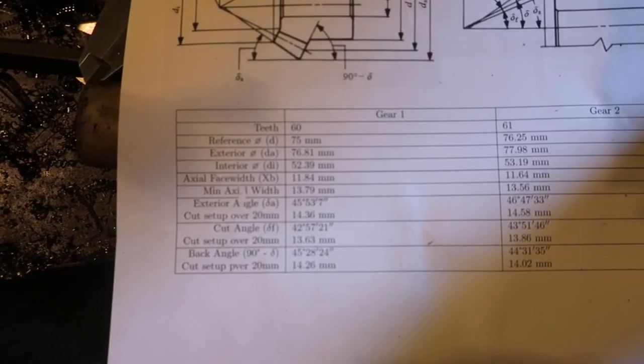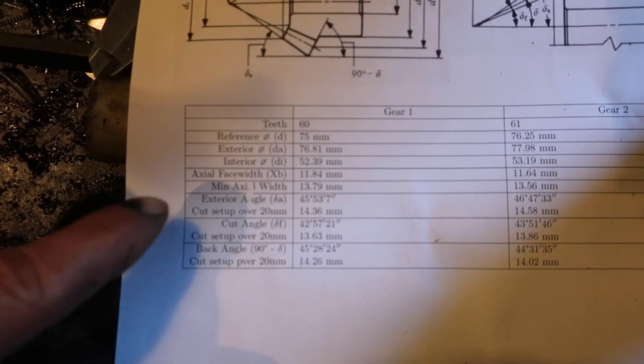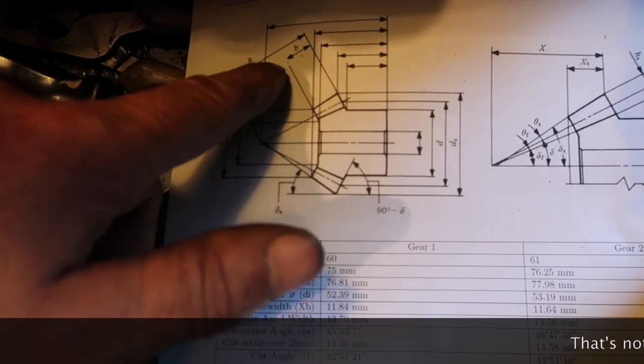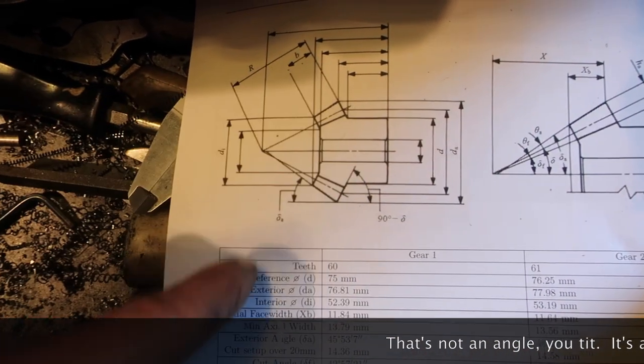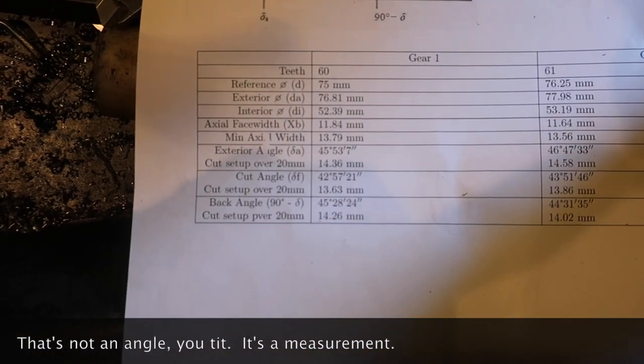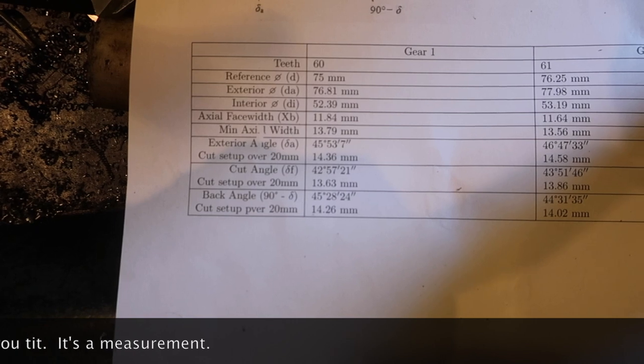And there we go. For the 60 tooth gear, which is the one we're about to look at, we need to set the exterior angle to 45 degrees, 53 minutes and 7 seconds.